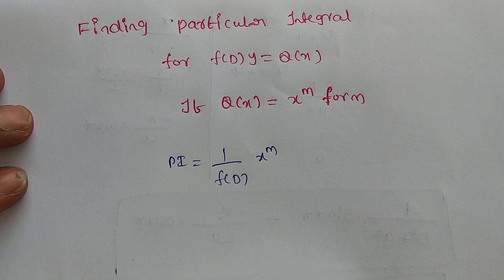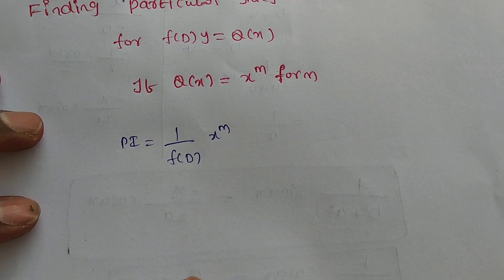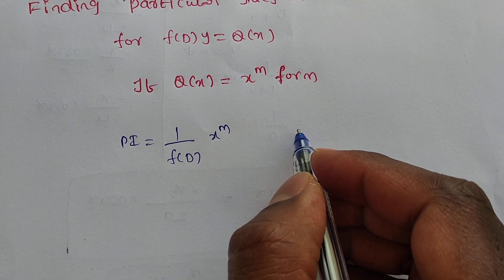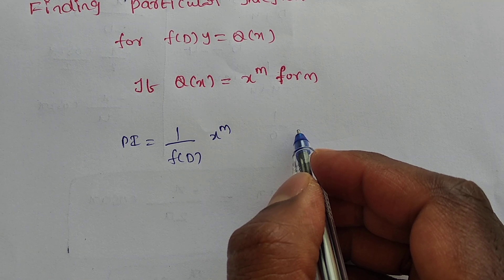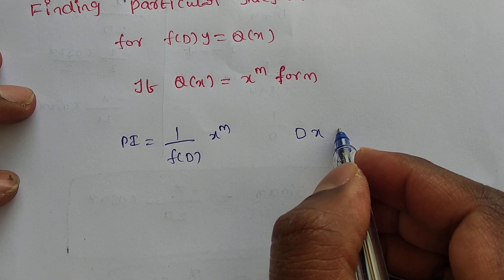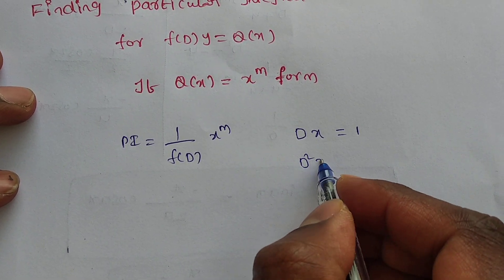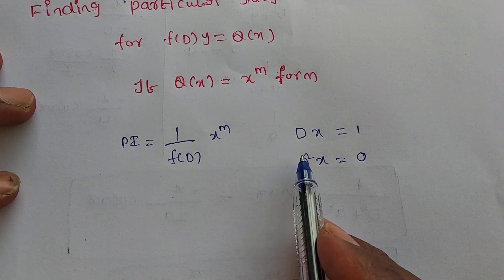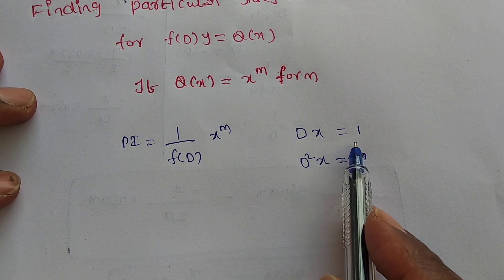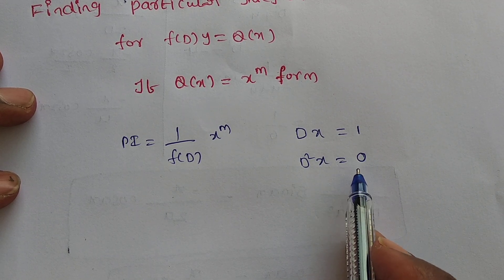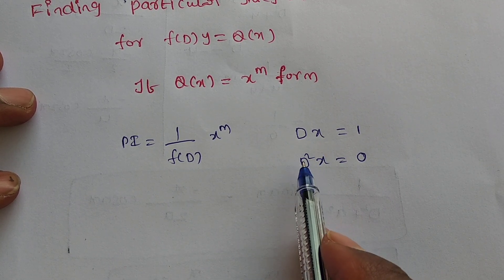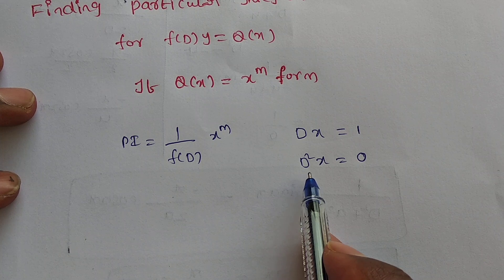Here Q(x) is x to the power m. Consider why we need a special approach: the first derivative of x is 1, D² of x is 0. So whenever a polynomial of degree 1 is differentiated more than once, you get 0. This is the key property we exploit.